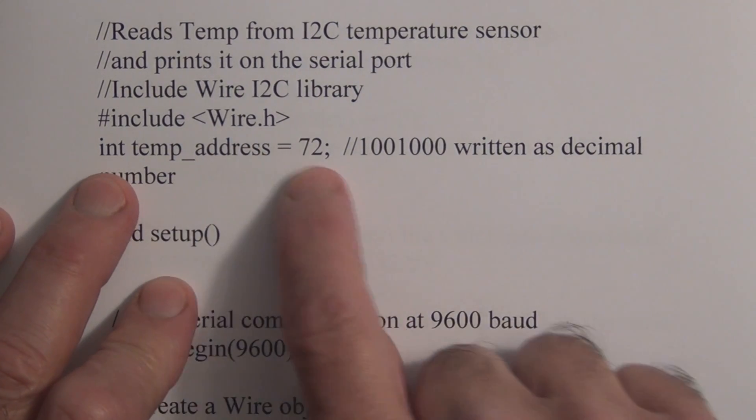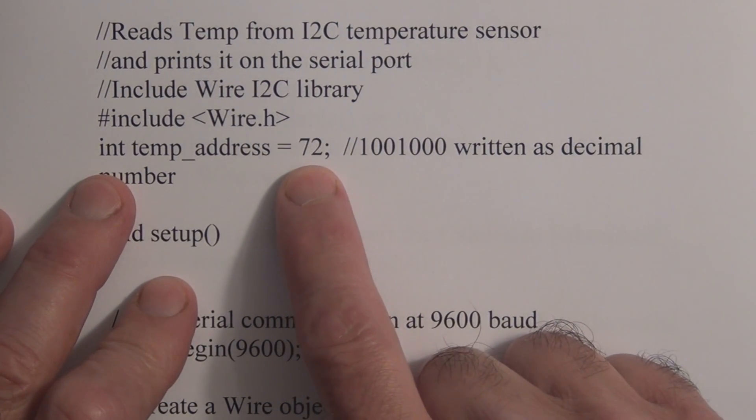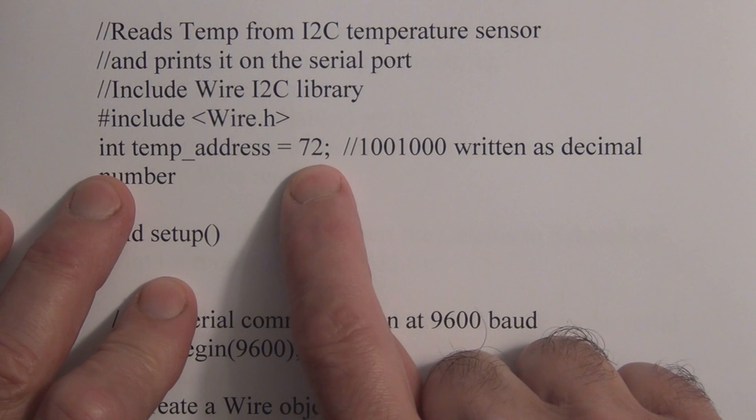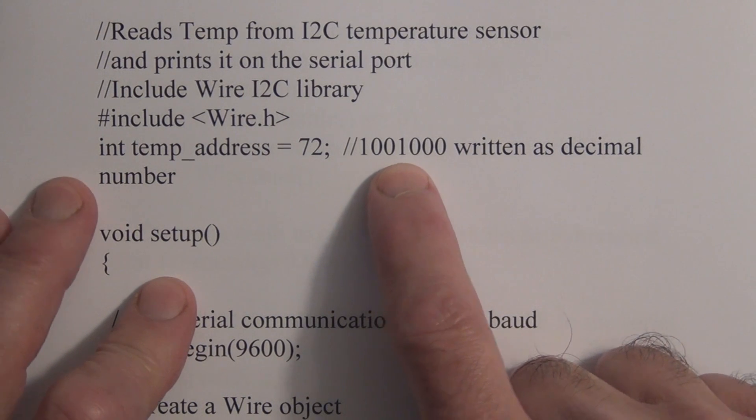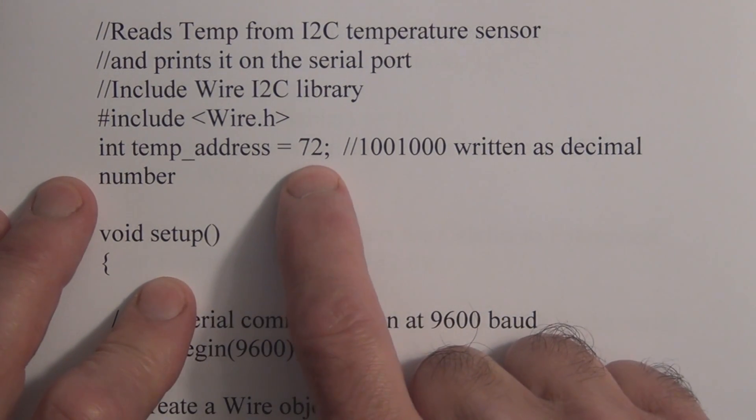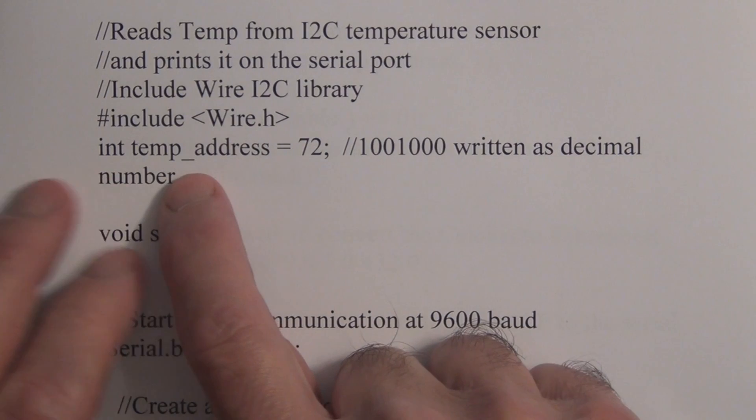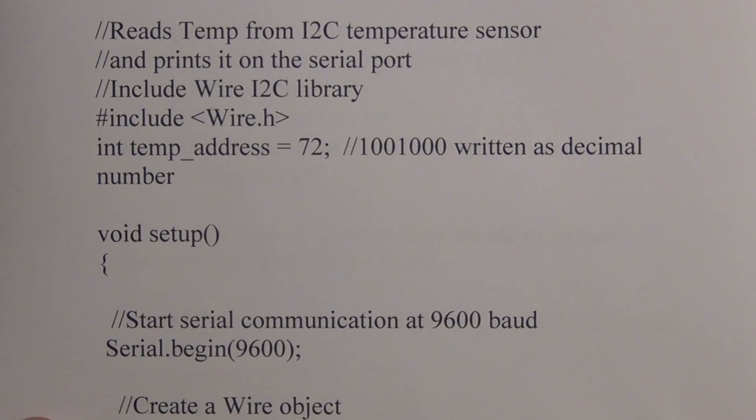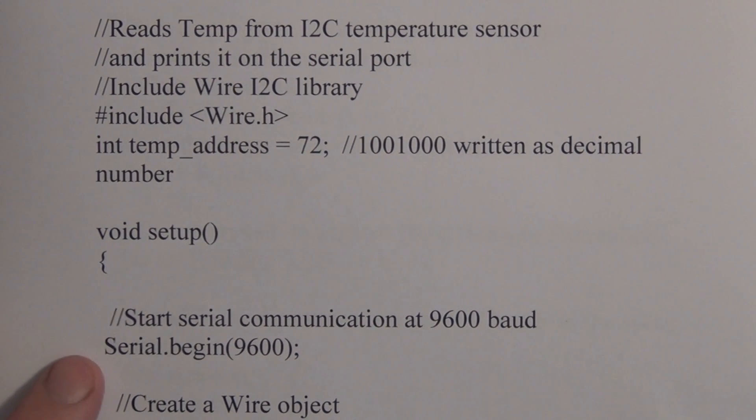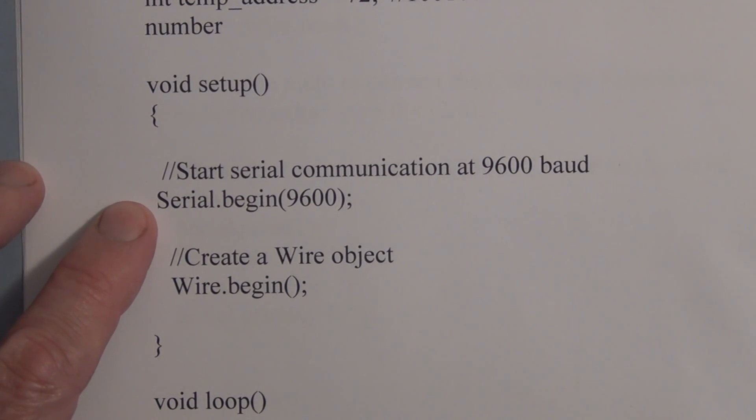And the address for the digital temperature sensor is 72. And here's the digital, the binary version of 72. So we assign 72 to this integer variable temp address. And then we initiate the serial port communication.